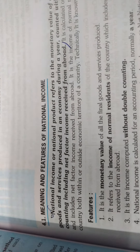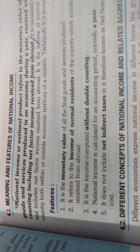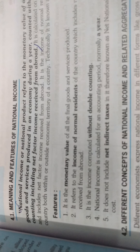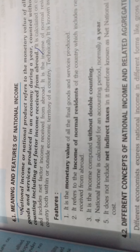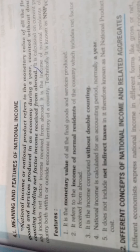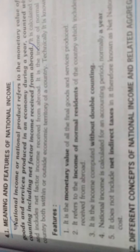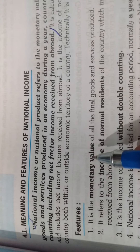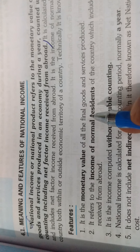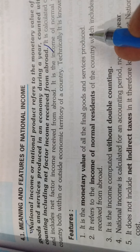Next, after this, there are some concepts — some main features or characteristics in the national income. The first feature is the monetary value of all the final goods and services produced.